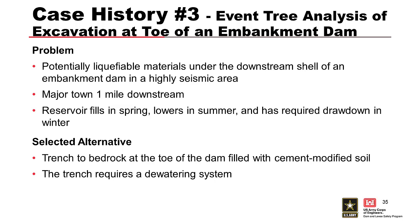Case history number three provides an example of how a quantitative event tree analysis was used to help decision-makers plan the construction schedule to reduce risk. For this project, potential liquefiable materials existed underneath the downstream shell of an existing embankment dam in a highly seismic area, with a major town located about a mile downstream that would be severely inundated if the dam failed. The reservoir typically goes through three annual stages: filling during spring runoff (March to June), lowering during irrigation and summer water use season (July through October), and drawn down during the winter flood season (November through February).